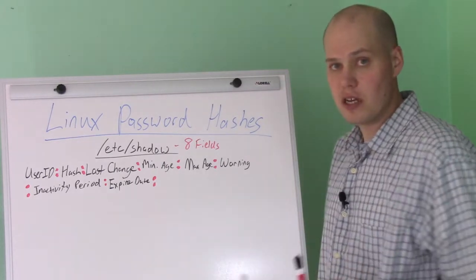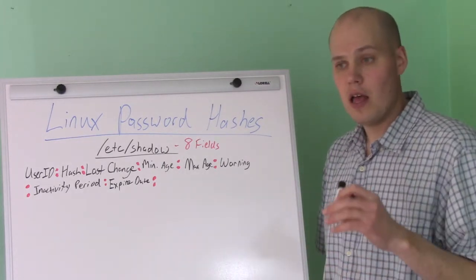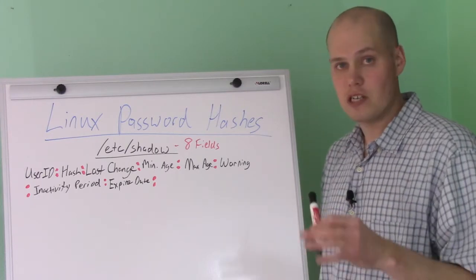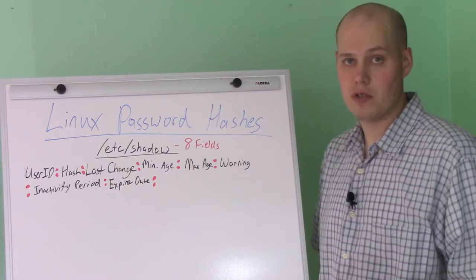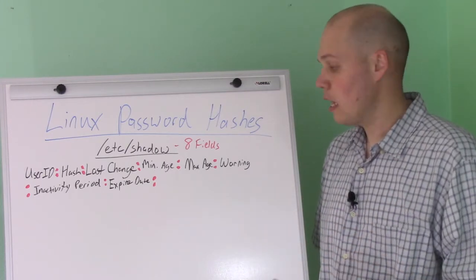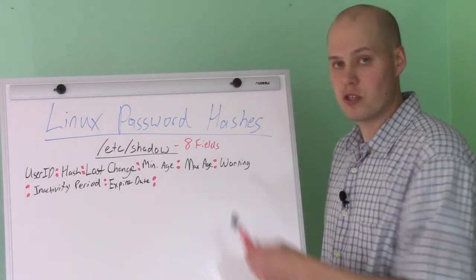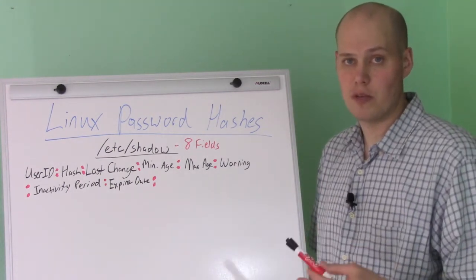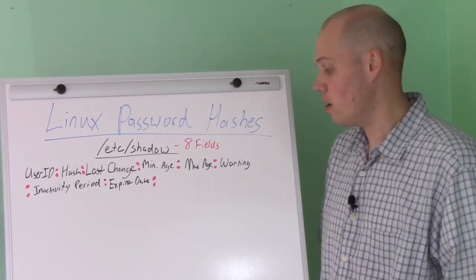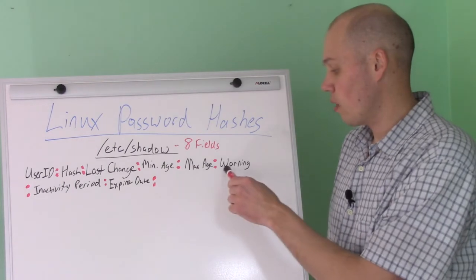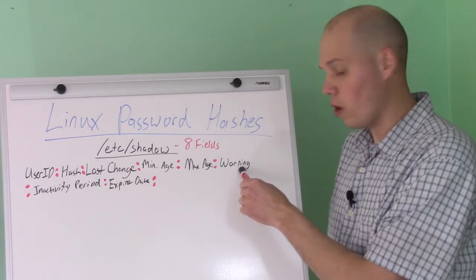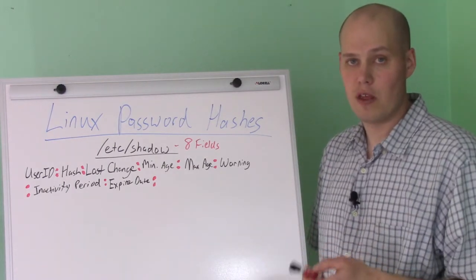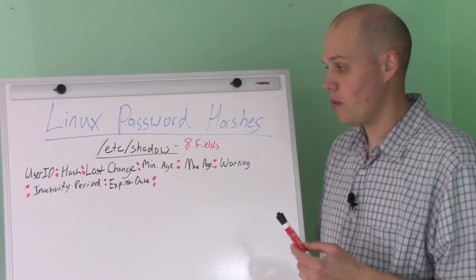The maximum age is the maximum number of days that the password can be valid. For example, if you set the password max age to 365, then the user would be forced to change the password after a year. The next is the warning — this is the number of days in advance that they'll get a warning that their password is about to expire.